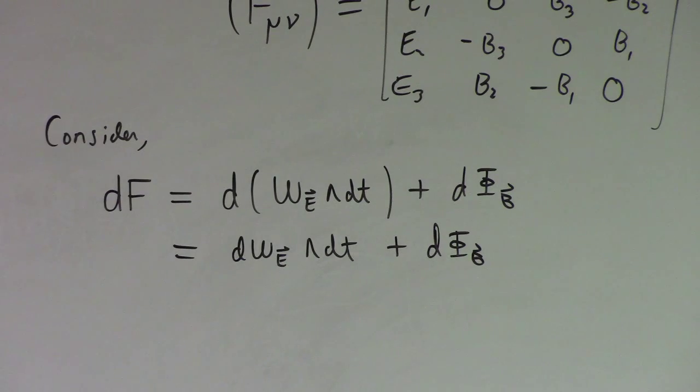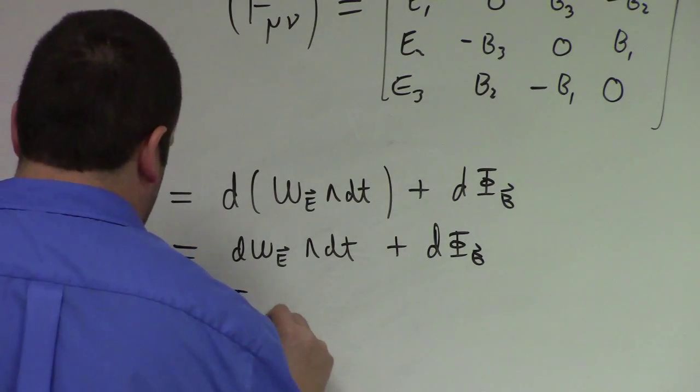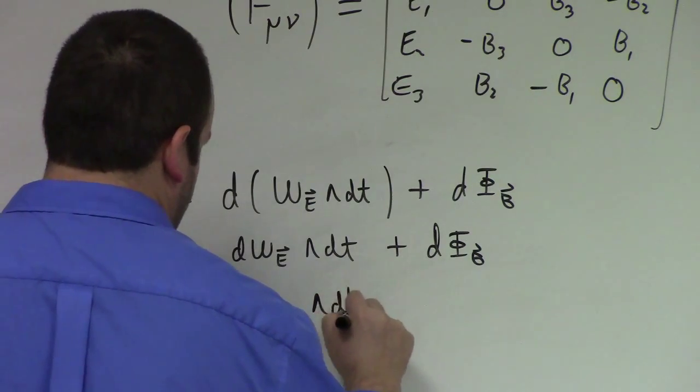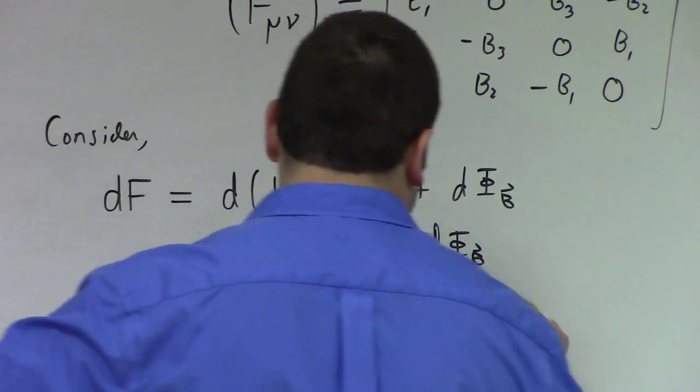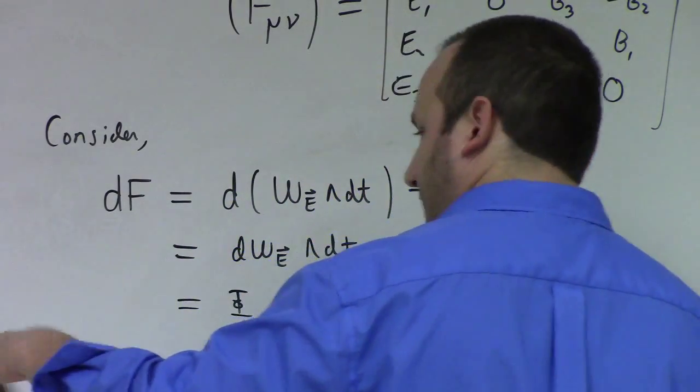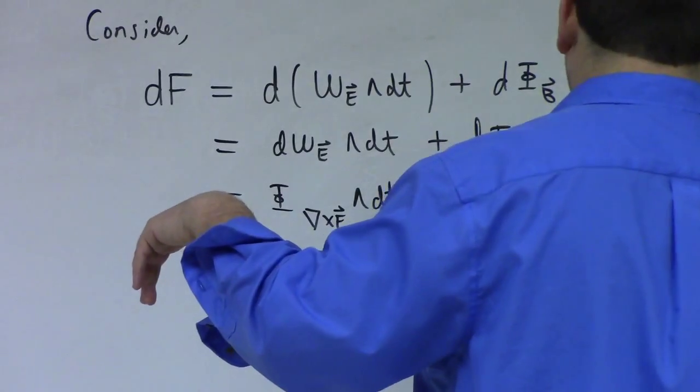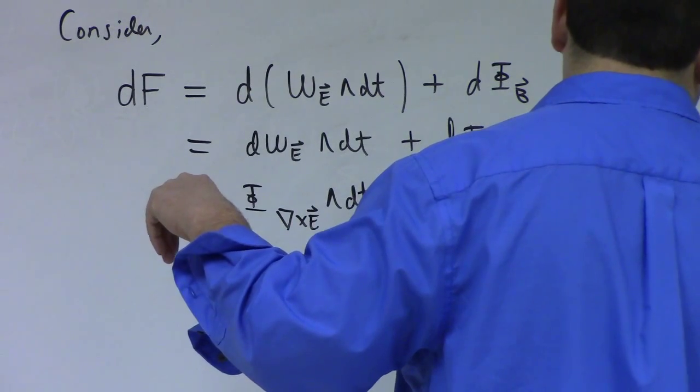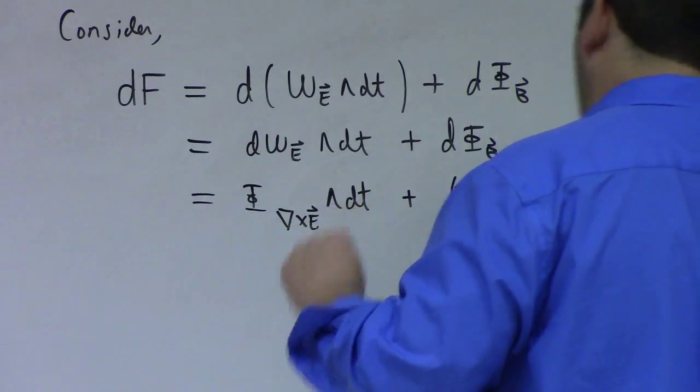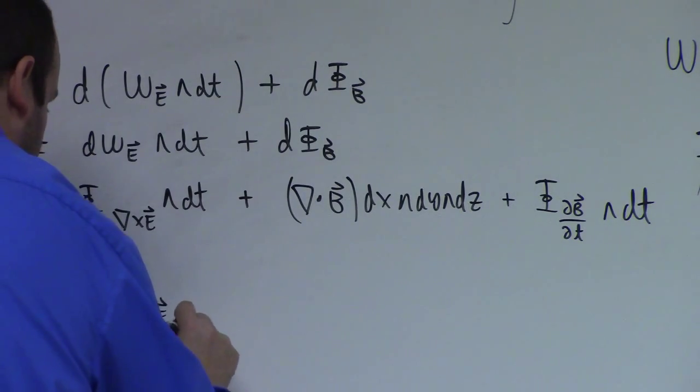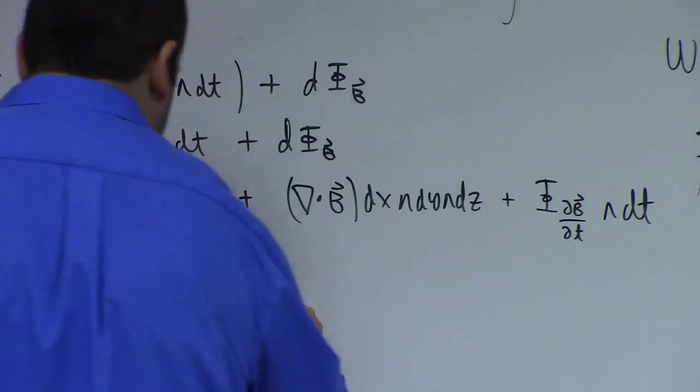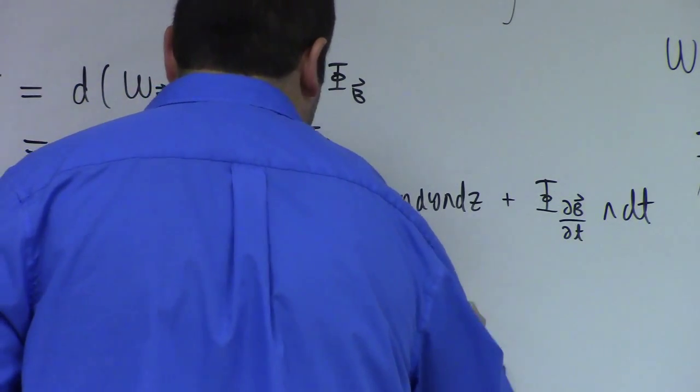But we worked those out. What is d omega_E? Well, this piece we can neglect because that will wedge with dt to be zero. What are we left with? We're left with the flux form of the curl of E wedge dt. And then the differential - we got all this stuff here. We've got the divergence of B times the volume form dx wedge dy wedge dz, then plus what? Plus the flux form of the time derivative of the magnetic field wedge dt. Aha! So we could rewrite this because the flux form is an isomorphism. It's the flux form of the curl of E plus partial B partial t wedge dt, plus the divergence of B, dx wedge dy wedge dz.